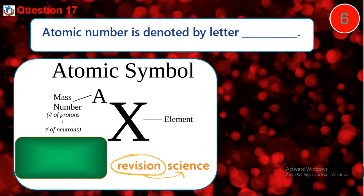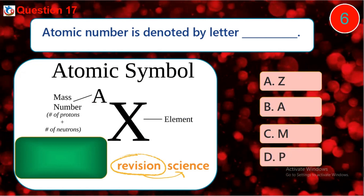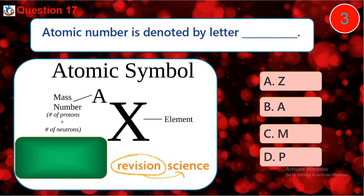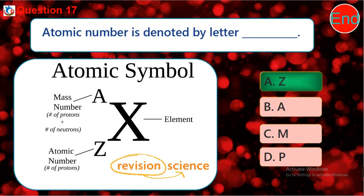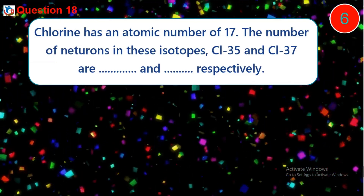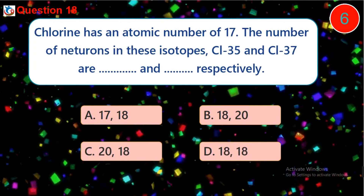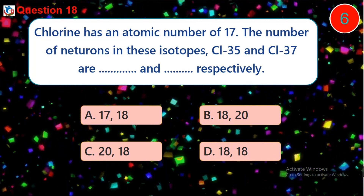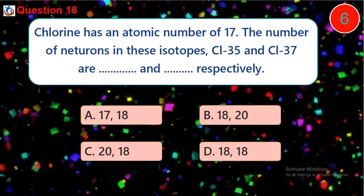Question seventeen: the atomic number is denoted by the letter dash. Question eighteen: the number of neutrons in Cl-35 and Cl-37 are dash and dash respectively. A. 17, 18, B. 18, 20, C. 20, 18, D. 18, 18.